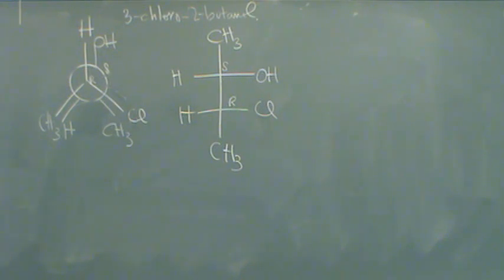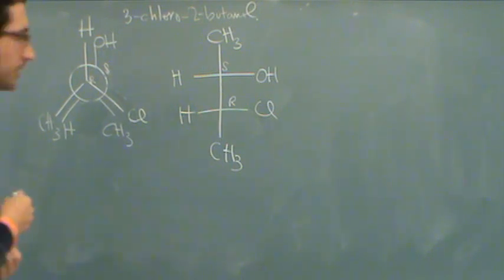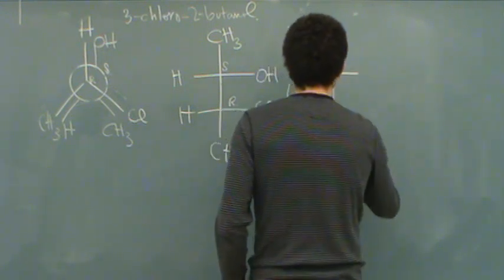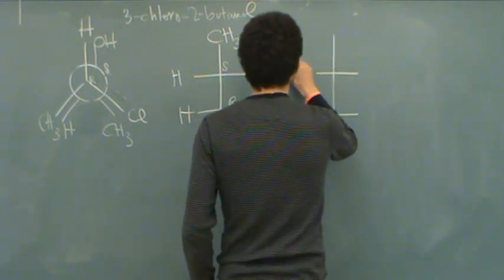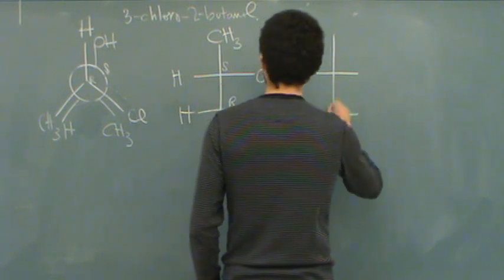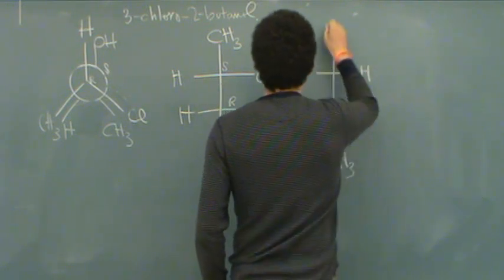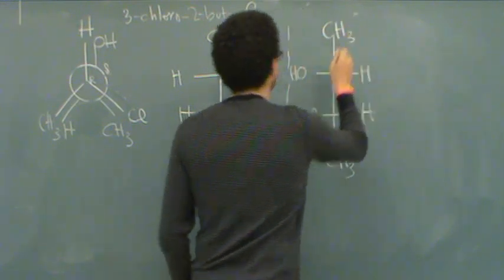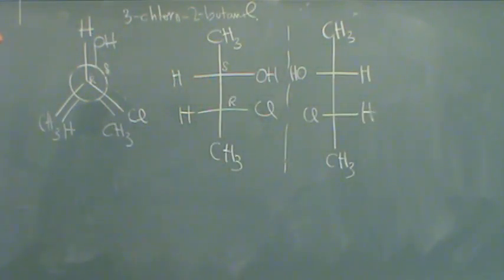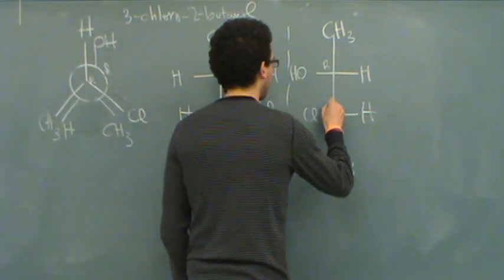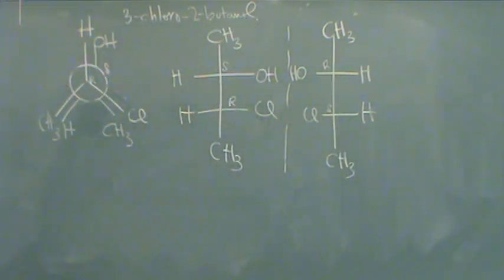The next part that I want to do, I want to draw the enantiomer and the diastereomer of this molecule. Okay, so the enantiomer is just simply the mirror image of this. There's the enantiomer. Now let's draw a diastereomer. So this enantiomer would be R, S. We flip both configurations.